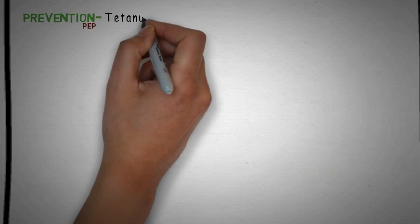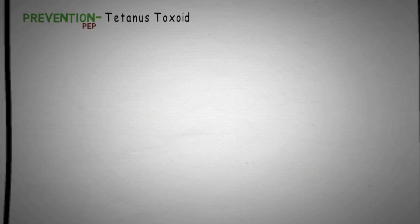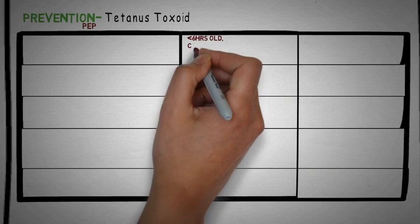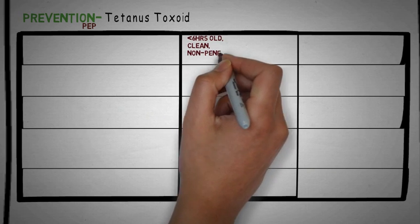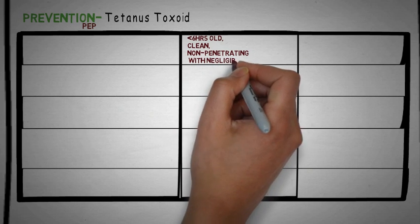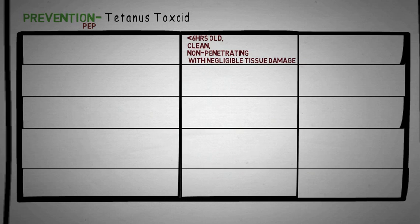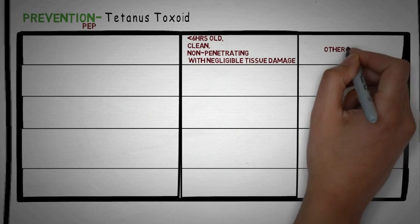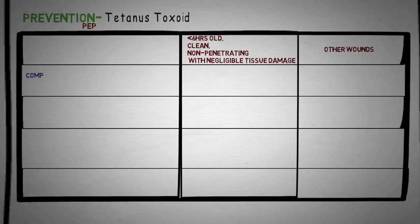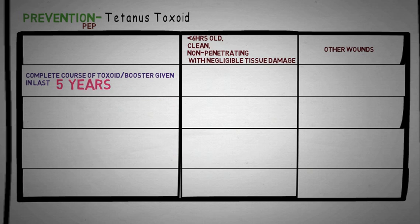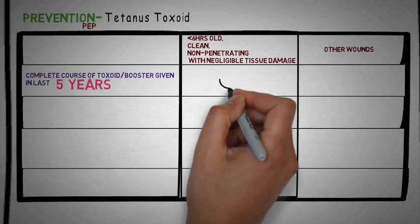Finally, we come to the prevention of Tetanus — that is, the post-exposure prophylaxis. We discuss what steps to take when we get an open wound, using a table. On one side are wounds which are less than 6 hours old, clean, non-penetrating, and have negligible tissue damage. On the other side are all other types of wounds. In a patient who has received a complete course of toxoid in the last 5 years, nothing needs to be given in both cases.